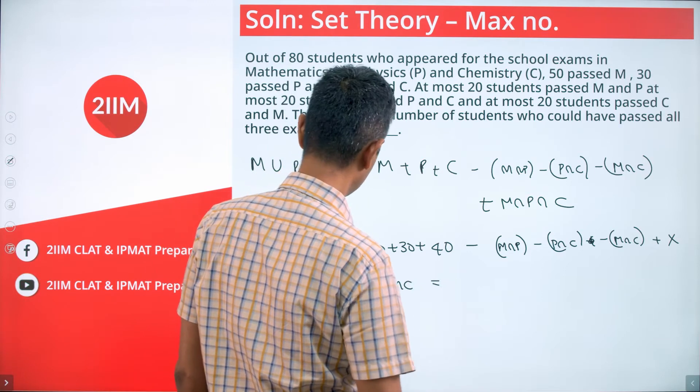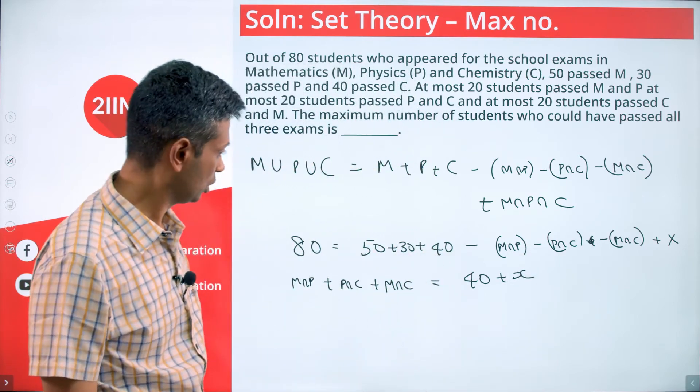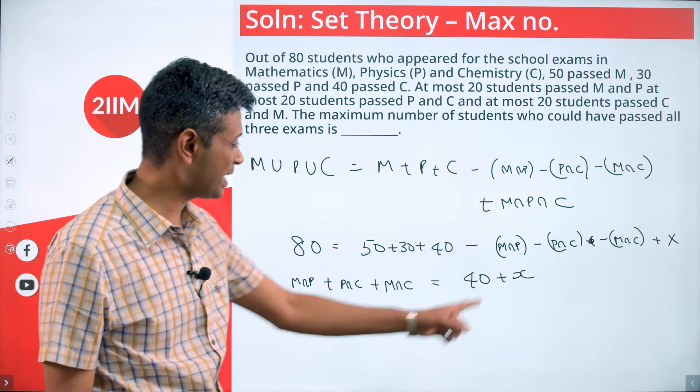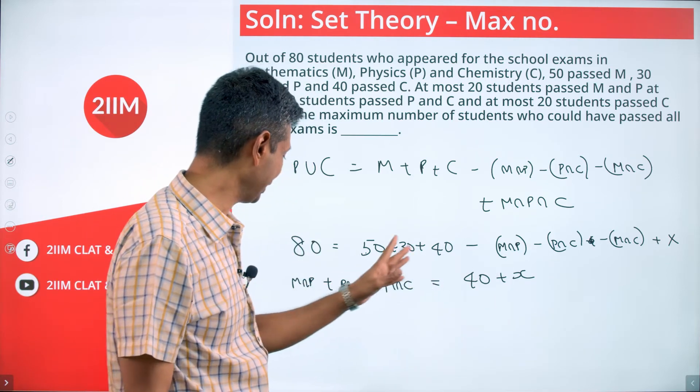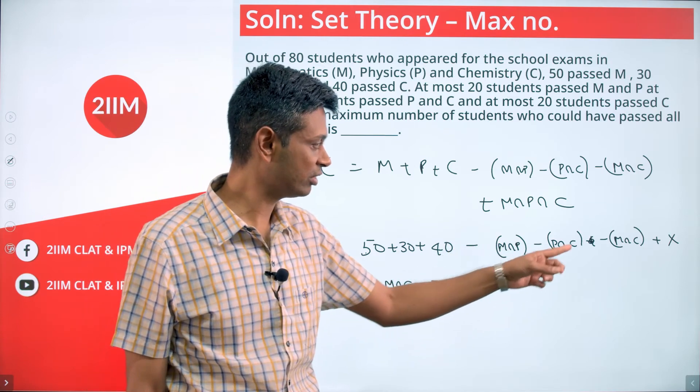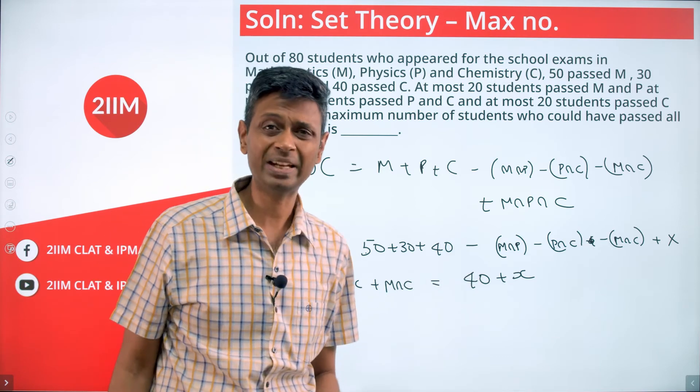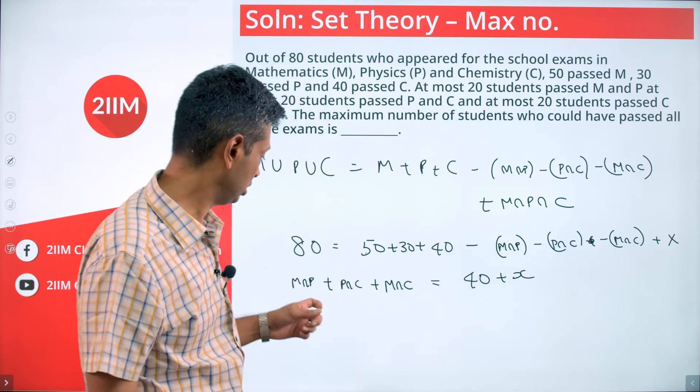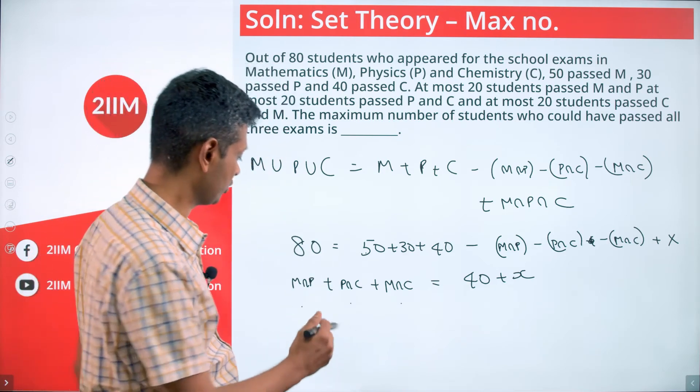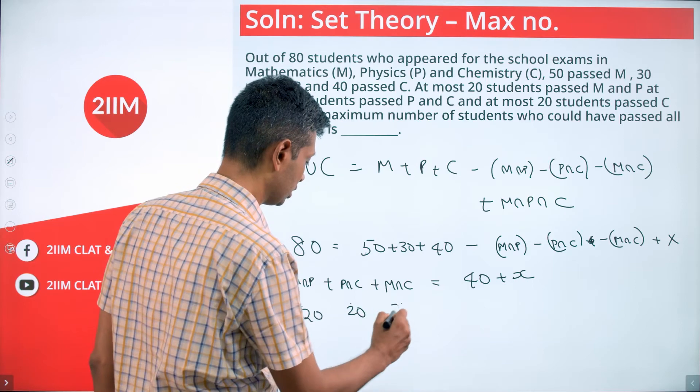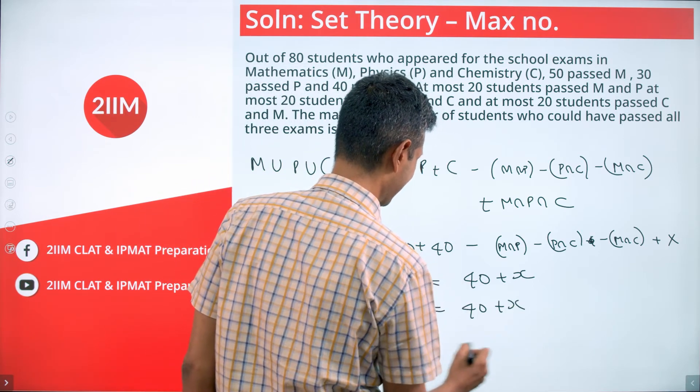That's our objective. We have manipulated this, and so we want to take all the numbers away. M intersection P, M intersection C, P intersection C - all three come to this side. We have it as 40 plus x. We want x as high as possible. These three should be as high as possible - at most 20. Best case scenario, put this as 20, 20, 20. So this is 40 plus x. X maximum is 20.